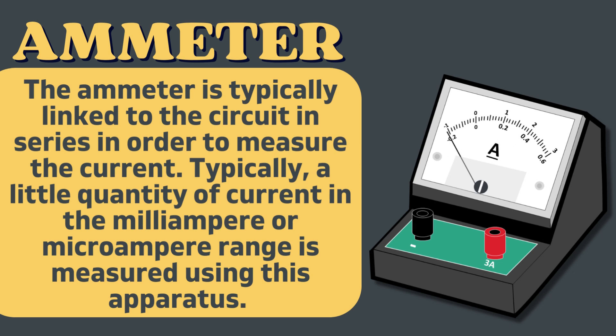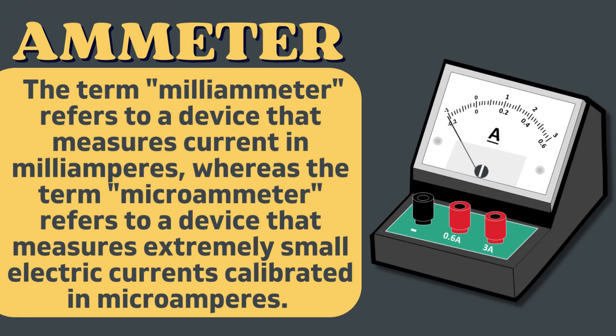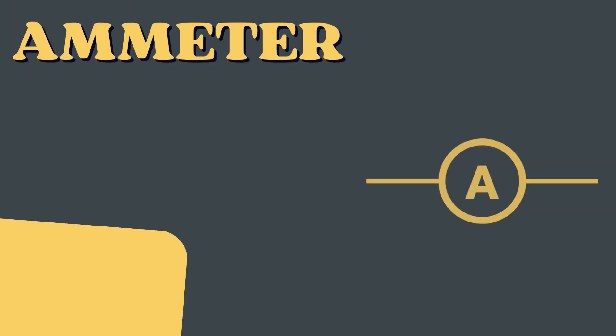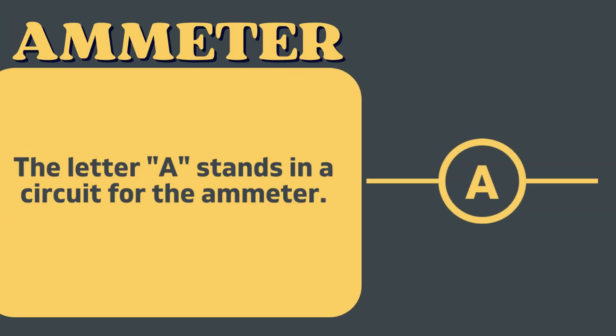Typically, a small quantity of current in the milliampere or microampere range is measured using this apparatus. The term milli-ammeter refers to a device that measures current in milliamperes, whereas the term micro-ammeter refers to a device that measures extremely small electric currents calibrated in microamperes. The letter A stands in a circuit diagram for the ammeter.